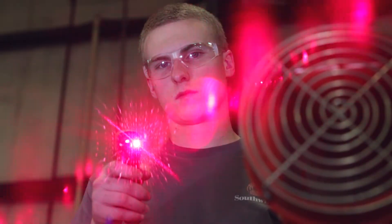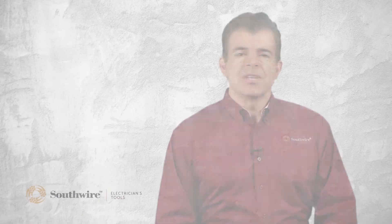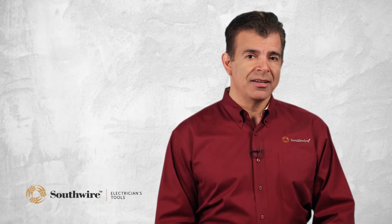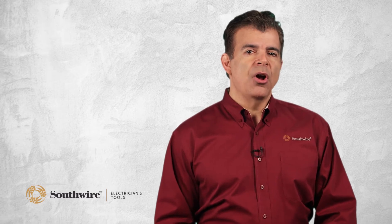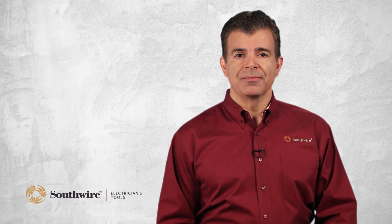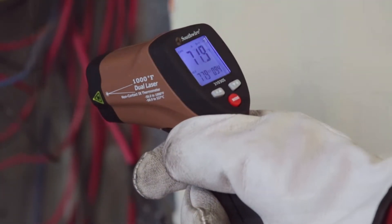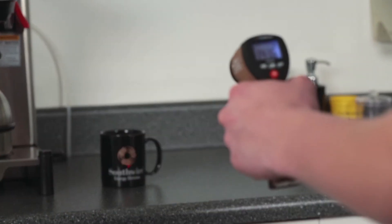There are many advantages to using an IR thermometer. Since infrared energy travels at the speed of light, you get instant readings. You can measure objects that are hard to reach or that are in motion. You can measure at a safe distance when testing live electrical circuits or objects that are too hot to touch.